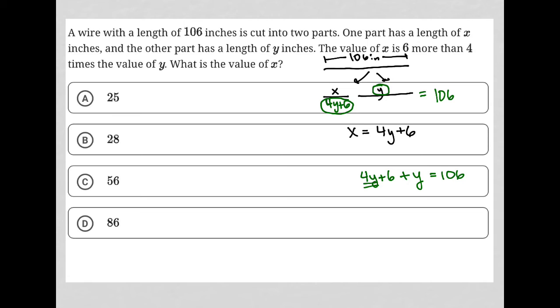Combining like terms, 4Y plus Y is 5Y plus 6 equals 106. I subtract 6 from both sides, leaving me with 5Y equals 100. Divide by 5, and Y equals 20.